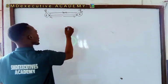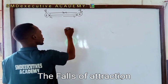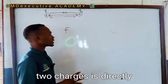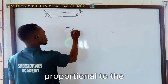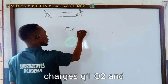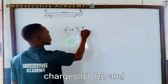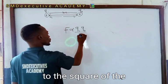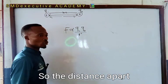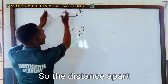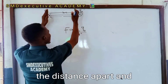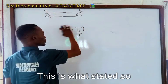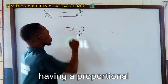Coulomb's law states that the force of attraction or repulsion between two charges is directly proportional to the product of their charges Q1 and Q2, and inversely proportional to the square of their distance apart. The distance apart is r, so we use r squared, and the product of their charges — this is what is stated.